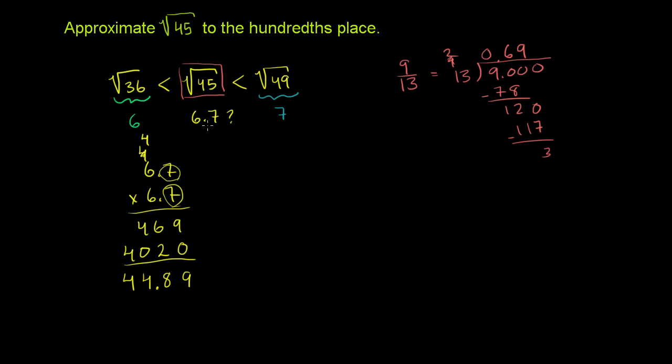but we're still not to the 100th place. We've only gone to the 10th place right over here. So if we want to get to 45, 6.7 squared is still less than 45. Or 6.7 is still less than the square root of 45.